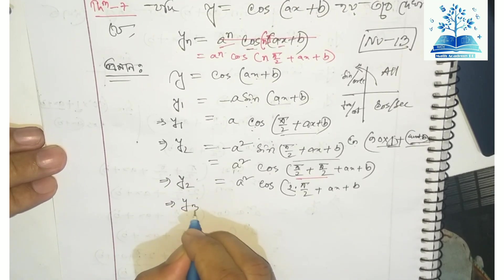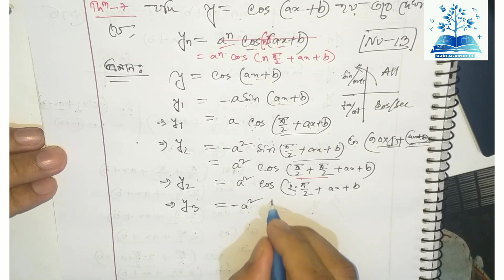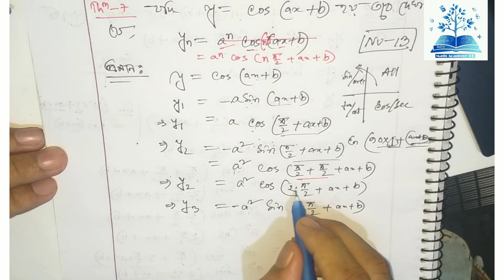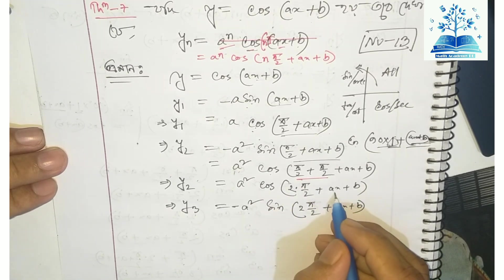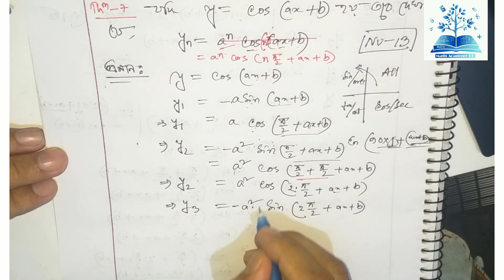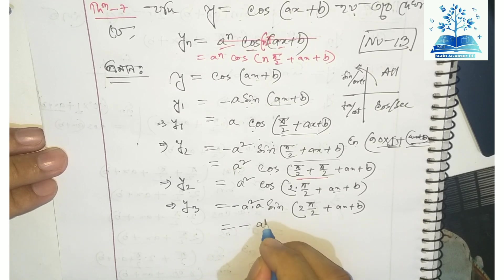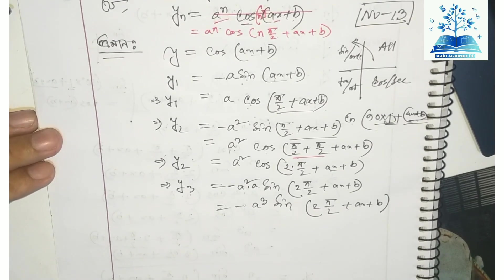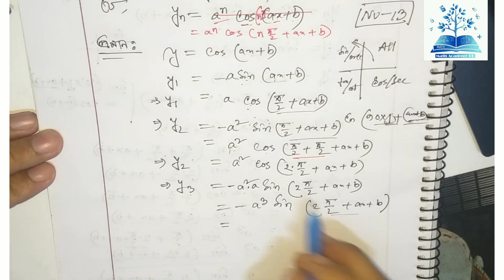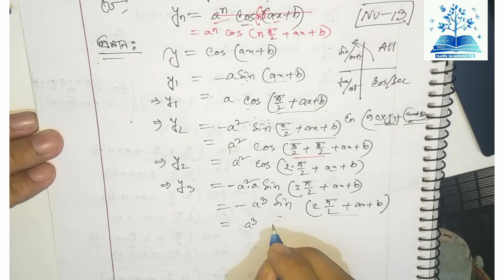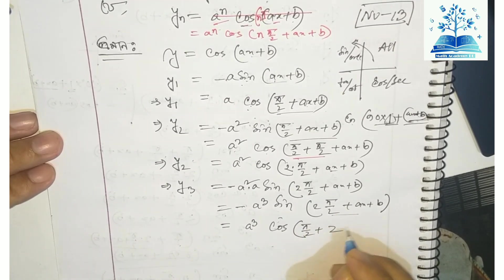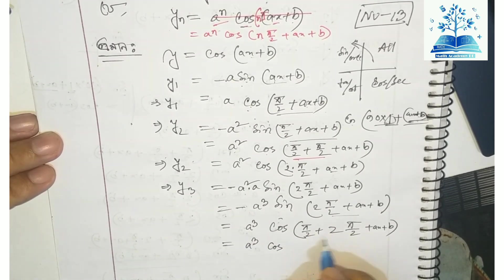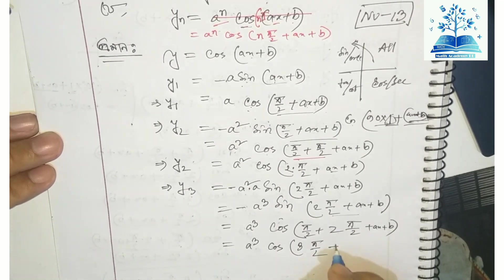For y₃, we differentiate -cos to get sin. So y₃ = -a³ sin(3π/2 + x + b). When we add the extra π/2, we get the pattern continuing.